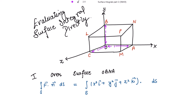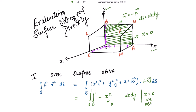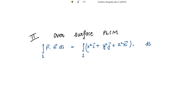Over surface OBNA, the outward unit normal is along the negative z-axis, so n̂ = −k, and ds = dx dy. Taking the dot product gives −z². On this surface z = 0, so the integrand is 0, and the surface integral equals 0. Marking this as 1.